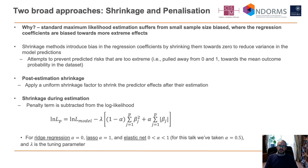Standard maximum likelihood estimation, which we typically use to develop prediction models, suffers from small sample bias where the regression coefficients are typically biased towards more extreme effects. The resulting problem is that we have probabilities that are too extreme. Shrinking methods introduce bias in the regression coefficients by shrinking them towards zero, which reduces the variance in the model predictions, pulling those probabilities away from 0 and 1 towards the mean outcome probability in the dataset.